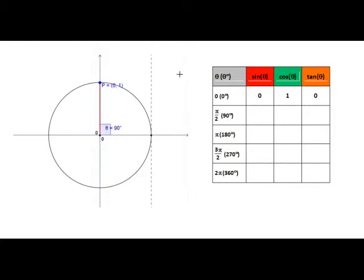Here we can see that sine, or the y coordinate of the point P, is 1. Cos of 90 degrees or cos of pi on 2 is 0. And tan of 90 degrees or tan of pi on 2 is undefined, since the radius at this point cannot be extended to meet the tangent.